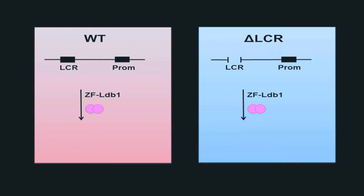The looping mechanism predicted that, in the absence of the LCR, LDB1 would fail to induce a chromatin loop and be unable to activate transcription. Indeed, beta-globin was not activated in the absence of an intact LCR. This demonstrates that LDB1 activity is indeed based on a chromatin looping mechanism.